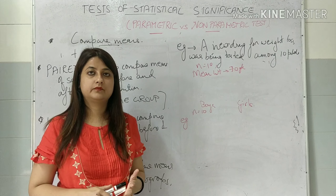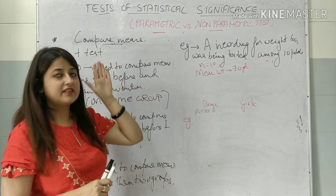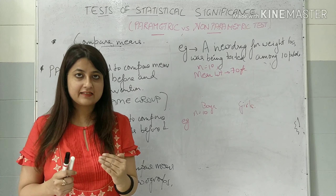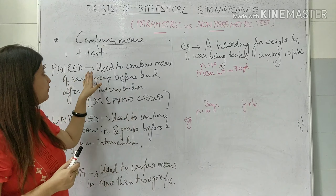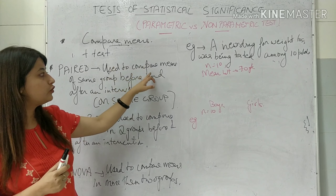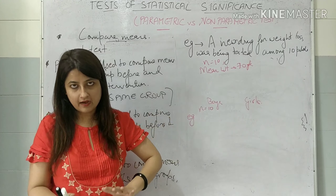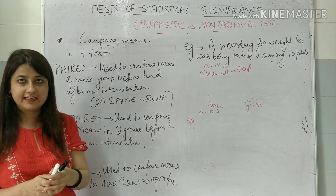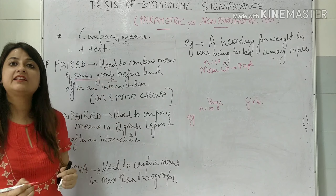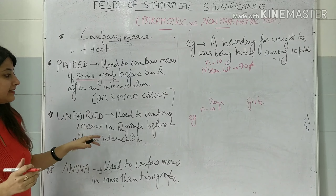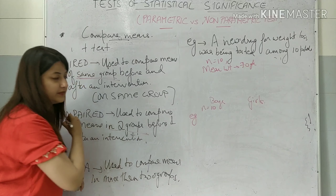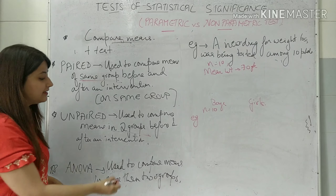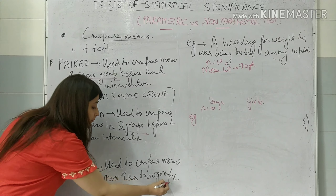You must at least know the names. Now let us understand what is a T-test. Whenever you have to compare means, you will use a T-test — a Student's T-test. It can be paired or unpaired. Paired means it is used to compare means of the same group before and after an intervention. Unpaired T-test is also used to compare means, but in two different groups before and after an intervention. ANOVA — analysis of variance — is used to compare means in more than two groups.